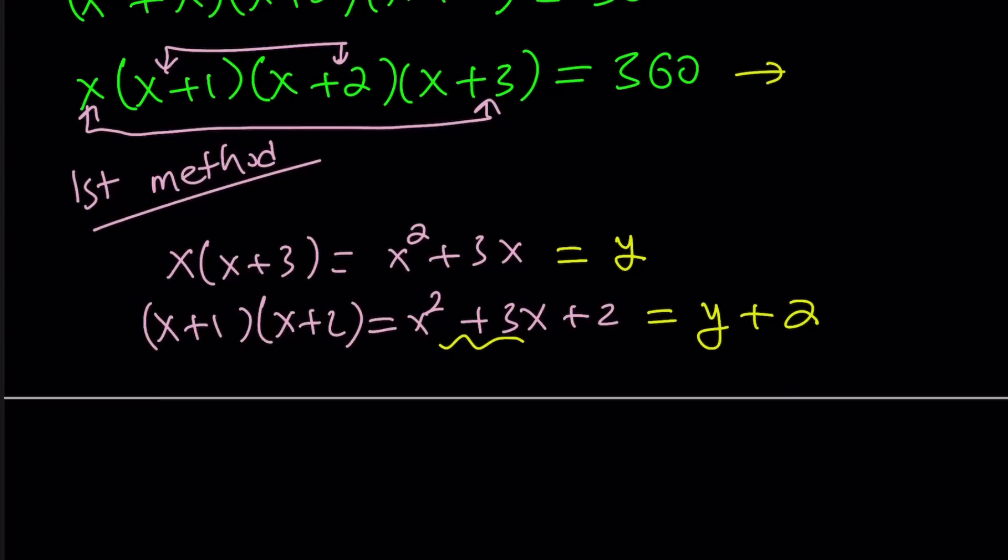Take a look, this is a quartic equation. If you go ahead and distribute, you're going to get an interesting equation like this one. Let me write the whole thing: x to the fourth plus 6x cubed plus 11x squared plus 6x minus 360 equals 0. Would you like to solve this quartic equation?